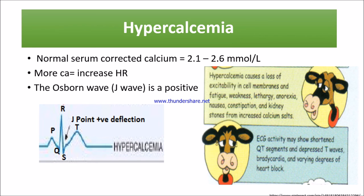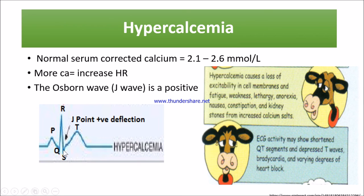With hypercalcemia there will be an Osborn wave (J wave) — a positive deflection. There will be a shortened QT interval and depressed T wave, and various degrees of heart block may be present. The depressed T wave is due to repolarization problems. The QT interval, representing ventricular depolarization to repolarization, is shortened because of the loss of excitability.